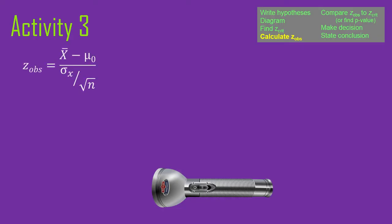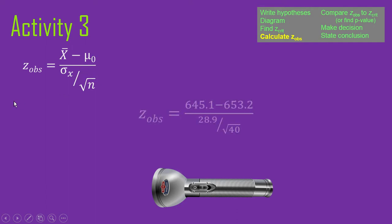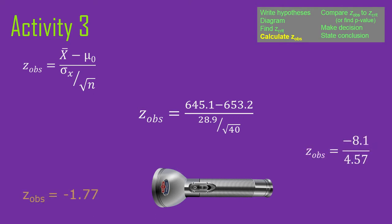The z-observed uses the all-in-one formula that bundles in the standard error of the mean — the standard deviation of the sampling distribution. The z-score for a sample mean comes from the distribution of means, so we use the standard deviation of that distribution. Plugging in our values, I came up with a z-observed of negative 1.77. Feel free to let me know if I've made a math error.